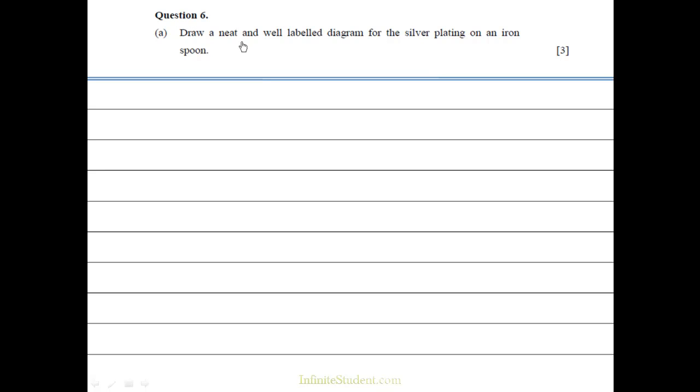Question number six, draw a neat and well labeled diagram for the silver plating of an iron spoon. Please note that whenever you've got to draw diagrams, the diagrams have to be drawn and labeled in pencil only.